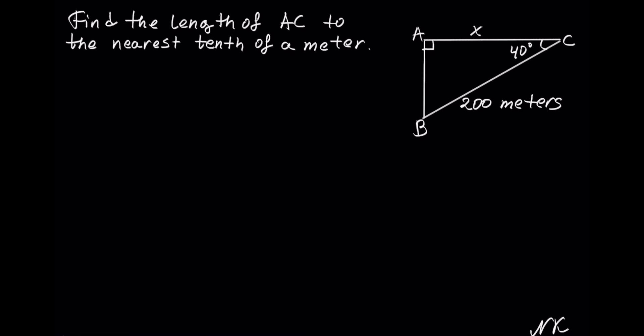Angle C is equal to 40 degrees. So we are given the measure of the hypotenuse, an angle that measures 40 degrees, and we have to find the adjacent side to the angle.